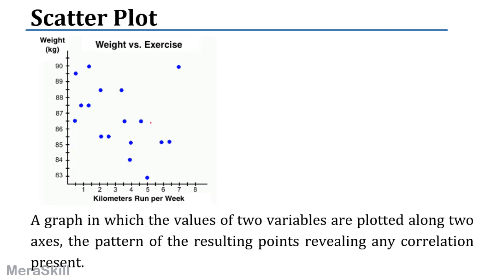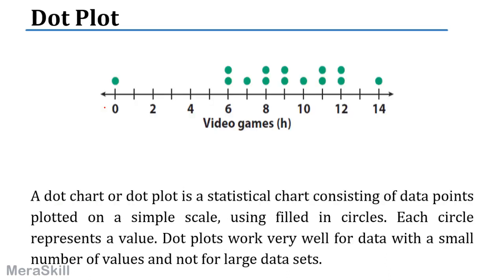A scatterplot has an x-axis and a y-axis. For example, the x-axis shows the amount of kilometers run per week and the y-axis shows weight — we are trying to check weight versus exercise. This can indicate, say, 83 kg of weight for someone running 5 km per week, showing a relationship between weight and exercise level.